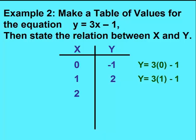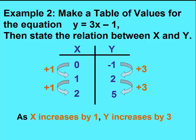Substitute in 2 for x, put it into our equation, and y equals 5. Now we can look at our table of values and find the relation between x and y. As x goes up by ones, y goes up by threes.